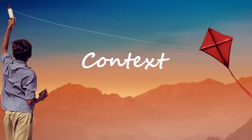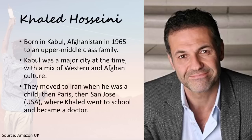When it comes to understanding the context, the first is to understand the author himself, Khaled Hosseini. He was born in Kabul, Afghanistan in 1965 to an upper middle class family. At this time, Kabul was a major city with a mix of Western and Afghan culture — a very westernised, very liberal city. However, they moved to Iran when he was a child, when the Afghanistan war broke out in the 70s, then on to Paris, then San Jose in the USA, where Khaled went to school and later became a doctor.